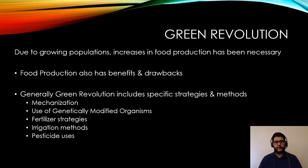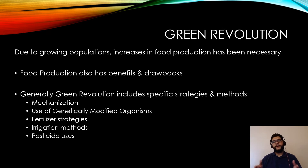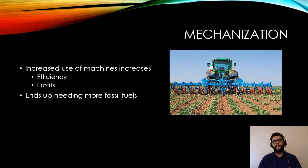The Green Revolution has several important components: mechanization, the use of genetically modified organisms (GMOs), fertilizer strategies, methods of irrigation, and pesticide use. The rest of unit 5 will go into these in depth — this video is a broad overview of the whole Green Revolution.